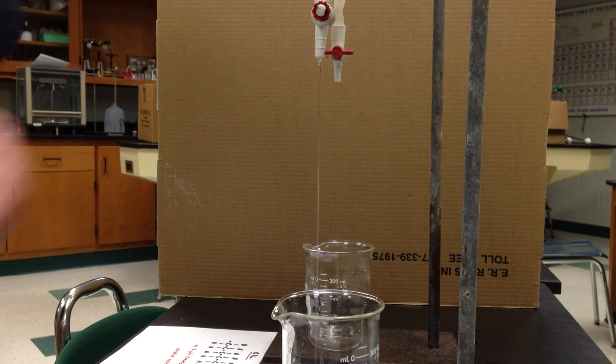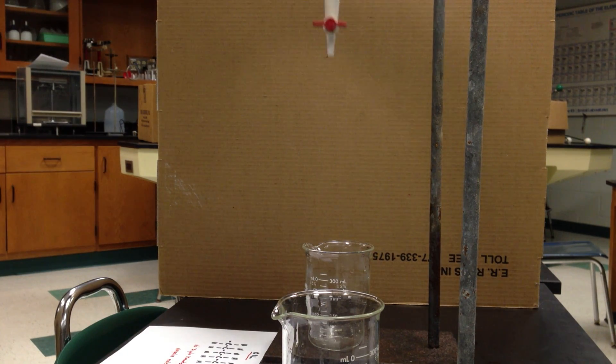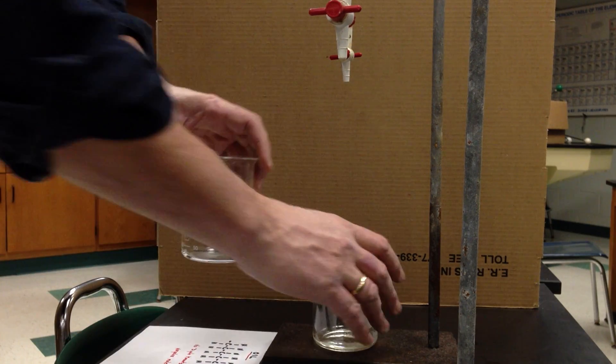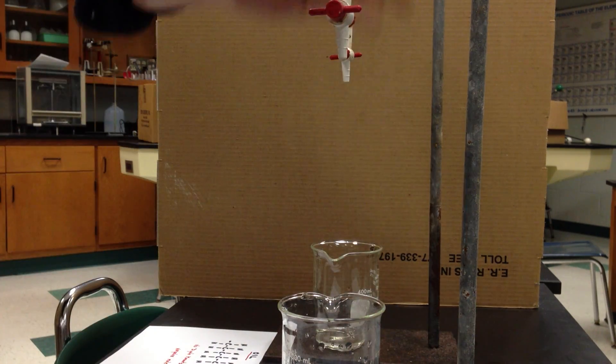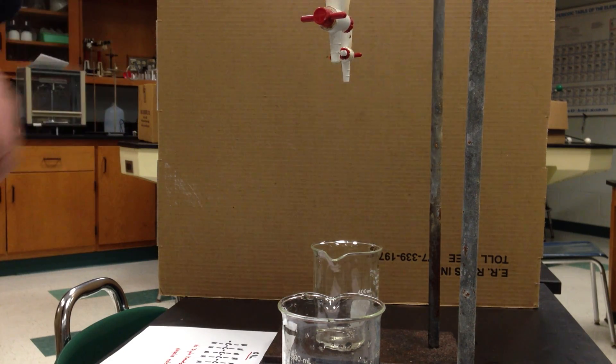Now let's do water, which we just talked about as a polar molecule. So I'm going to pull back, bring the water separatory funnel here. And let's do the water. Make sure I'm pouring water into the water beaker because they don't separate very well. And now I'm going to do the same thing.